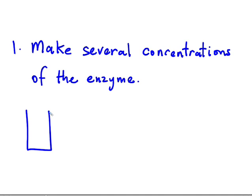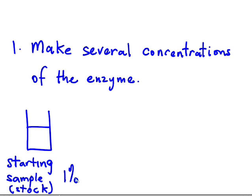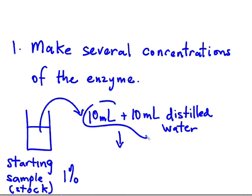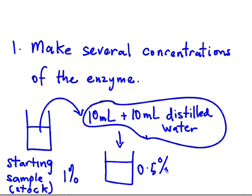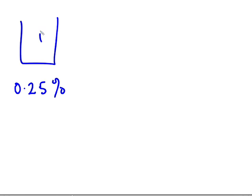First we make several concentrations of the enzyme using a serial dilution technique. We start with a stock solution of 1%, then take a certain volume and dilute with an equal volume of water, which gives us a 0.5% solution. We continue the dilution series, taking 10 mL from the 0.5% beaker and adding to 10 mL of distilled water to get 0.25%. Continue diluting two or three more times to get several different concentrations of the enzyme.